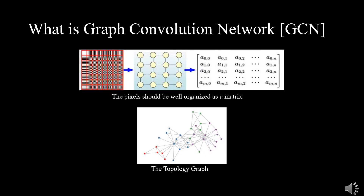CNN is essentially a weighted sum, and it can effectively extract spatial features. However, the pixels should be well organized as a matrix, named as Euclidean structure. There are still many non-Euclidean structure data, like social networks and information networks. Thus, a graph convolutional network, GCN, was developed to deal with such structure. The meaning of graph here is topology in graph theory.